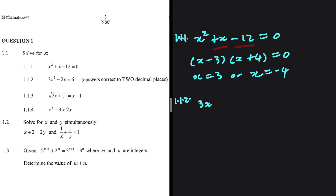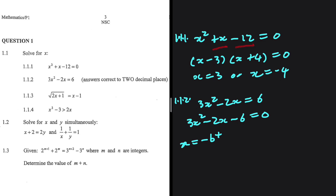We have 3x squared minus 2x equals 6. So 3x squared minus 2x minus 6 should equal 0. We're writing the equation in standard format. x equals minus b plus or minus the square root of b squared minus 4ac, everything divided by 2a.